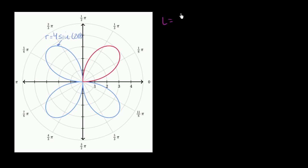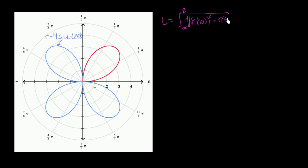So let's remind ourselves that the arc length is going to be the integral from our starting angle to our ending angle — we'll call it from alpha to beta — of the square root of the derivative of our function with respect to theta, squared, plus our function squared, d theta.